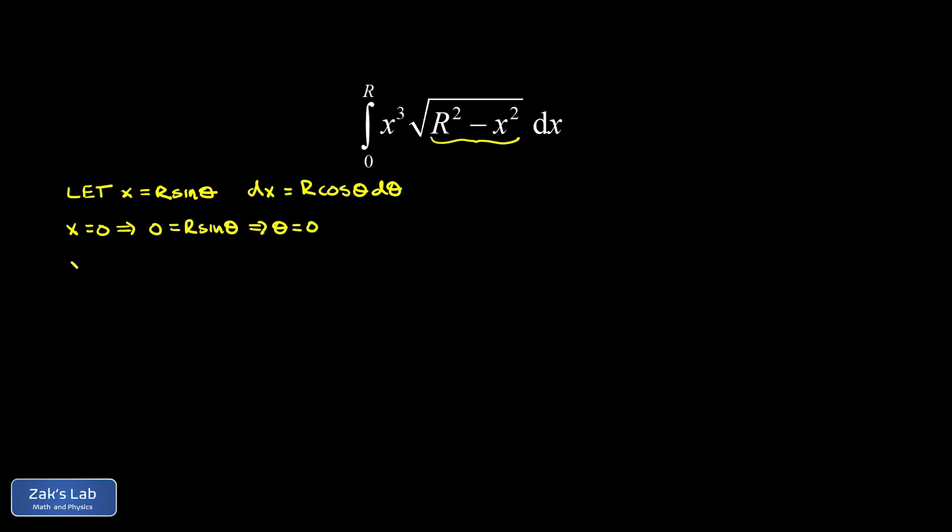When I look at the upper limit, x is equal to r, that means r is equal to r sine theta. Dividing by r, I find out that the sine of theta is equal to 1, which happens when theta is equal to pi over 2.